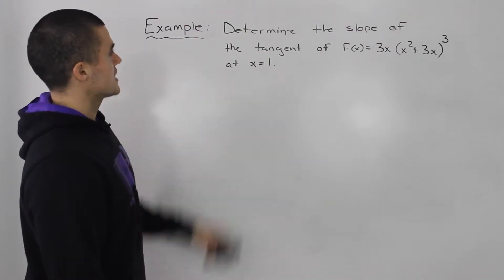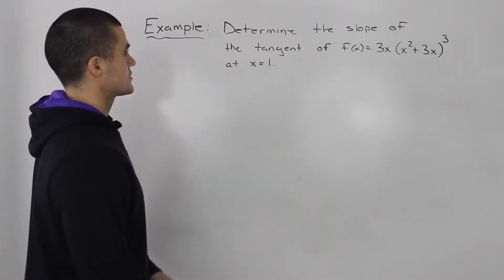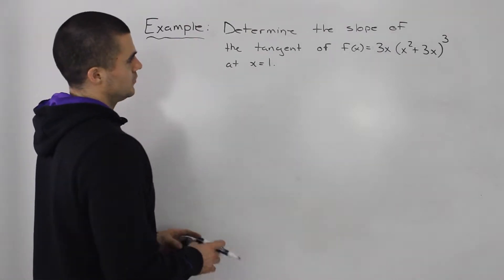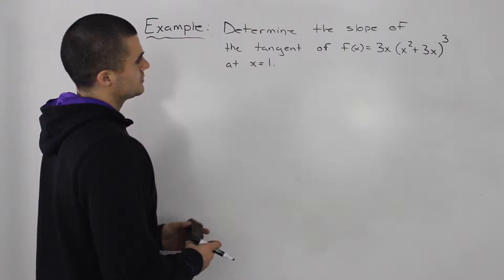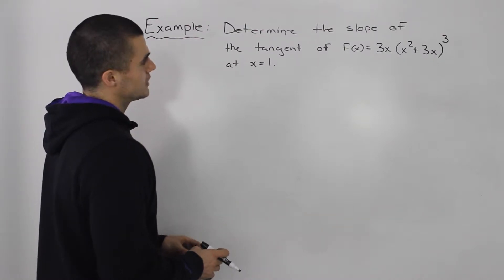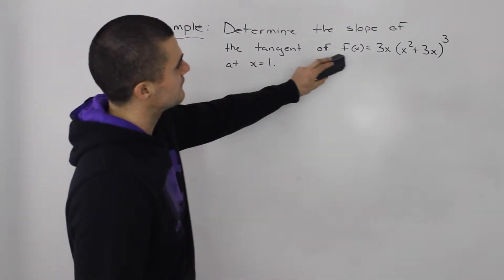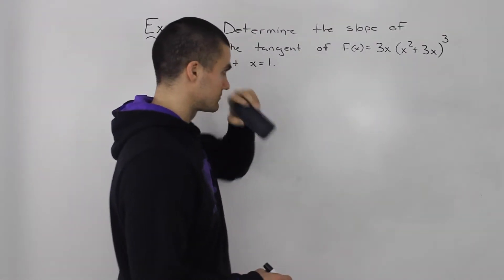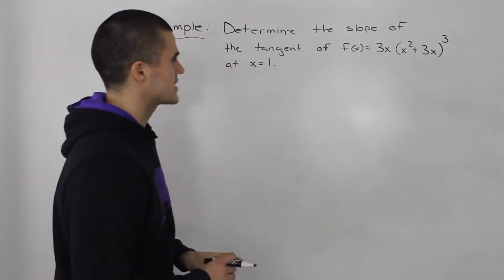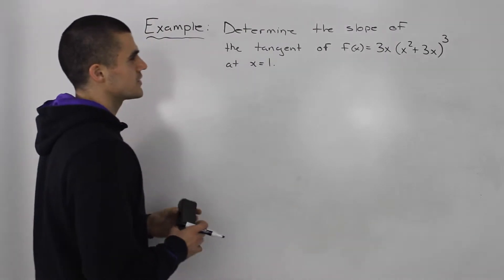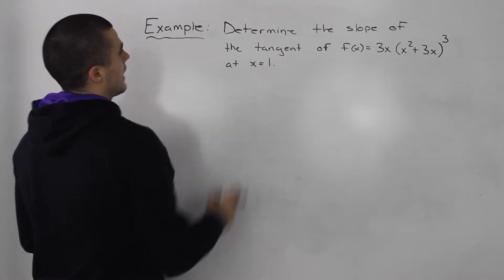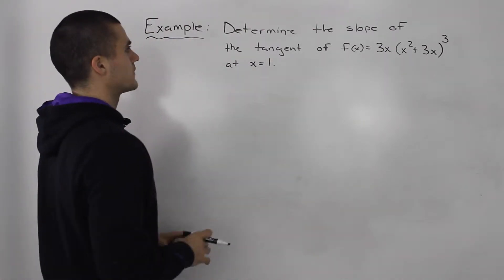Let's do an example. We have to determine the slope of the tangent of f(x) = 3x times (x² + 3x)³ at x = 1.